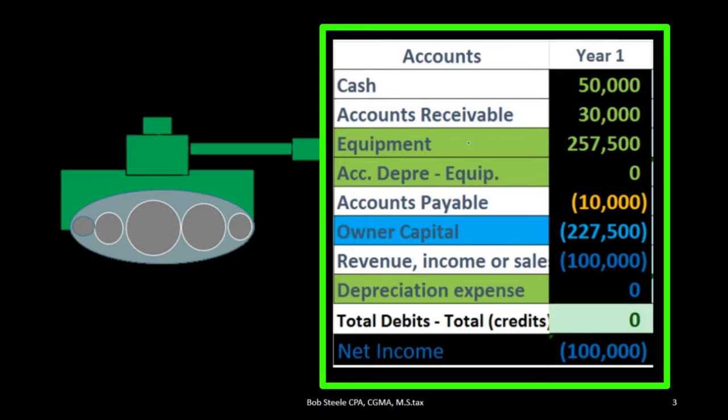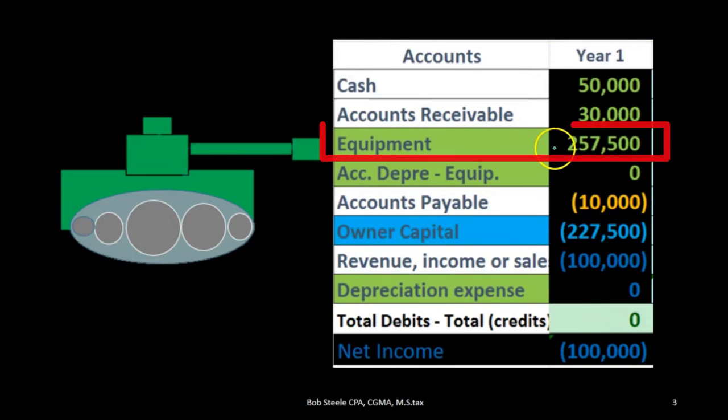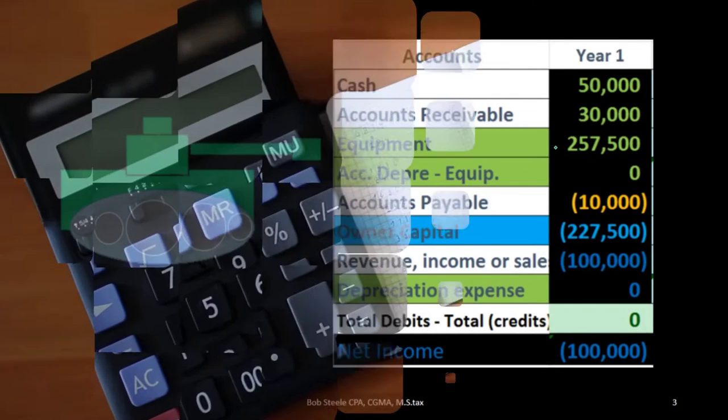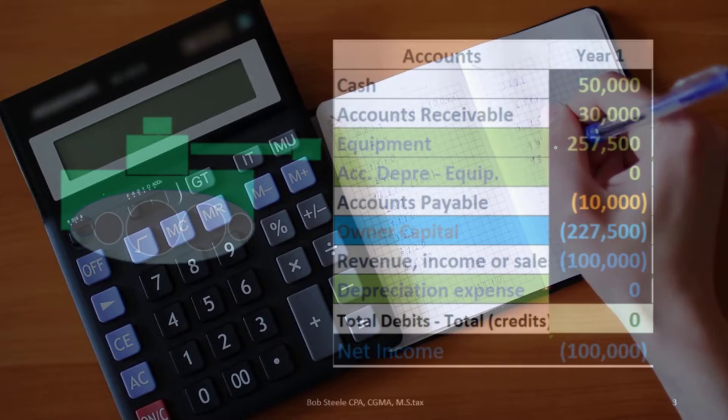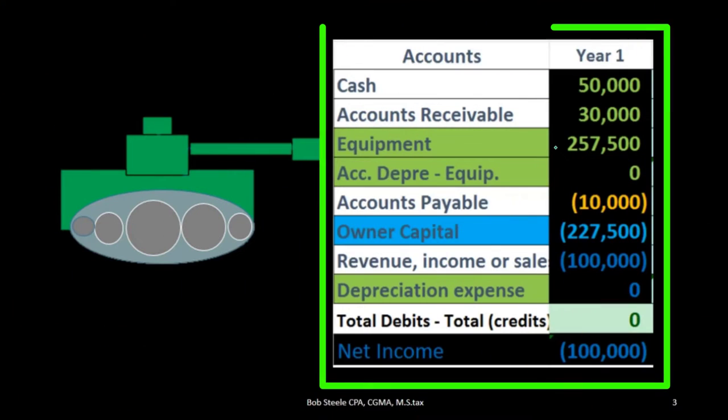That's in accordance with the matching principle. Once we have the tank on the books as equipment, we're going to depreciate it over the useful life in an attempt to match that cost to the time period in which it has been used to help generate revenue.